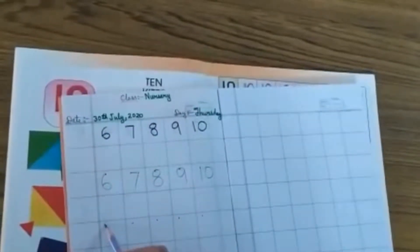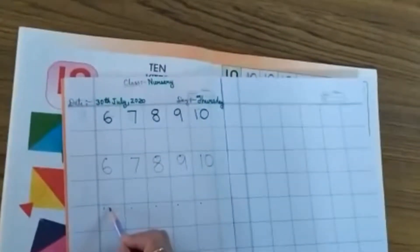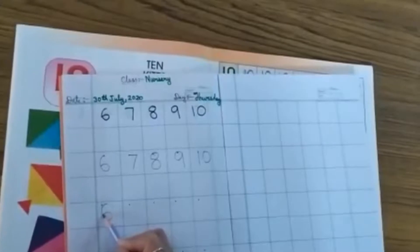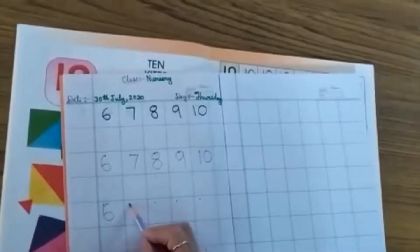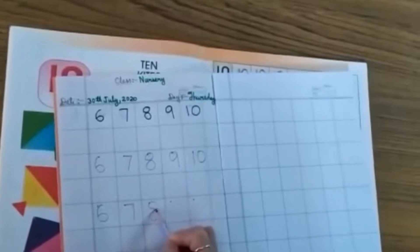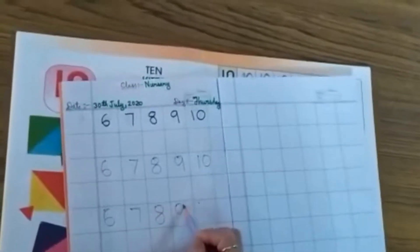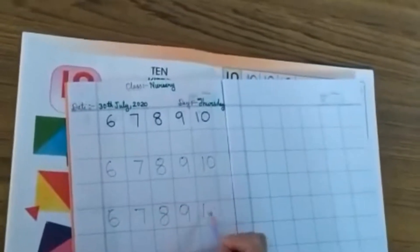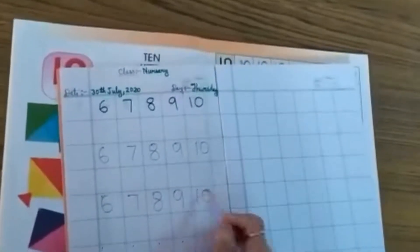Then you write another line. On this line you start from the number 6, then 7, then 8, 9, 1, 0, 10.